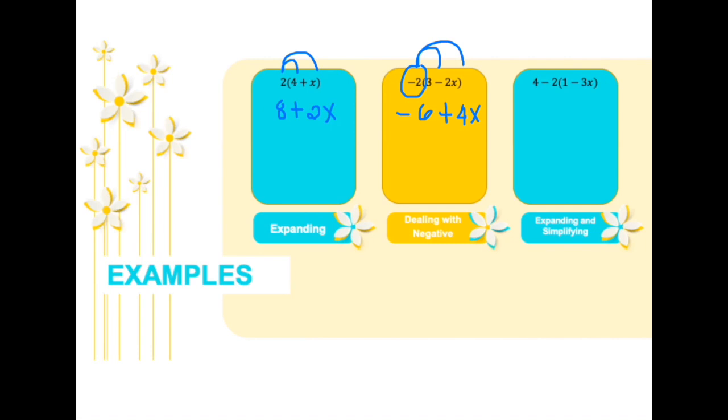And the last one is expanding and simplifying. So when we talk about simplifying, that means that we have to combine like terms. So what are like terms? Like terms are terms which have the same variable. For example, 2x and 3x are like terms. Negative y and 6y are like terms.